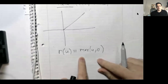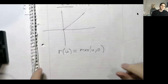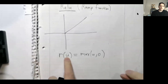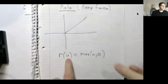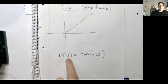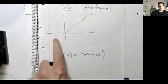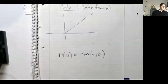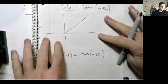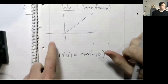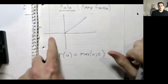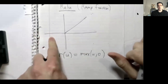This is called the ReLU activation function, or just the ramp function. It's called an activation function because if the input u is positive, it's like the function is activated and the output is non-zero. If the input u is negative, the function is not activated and the output is just zero. If the input is positive, the output equals the input. This is as simple as it gets for a nonlinear function.